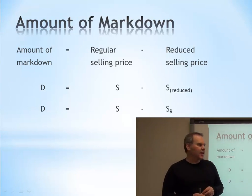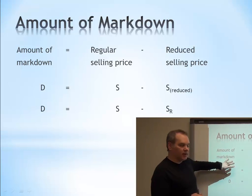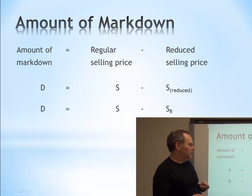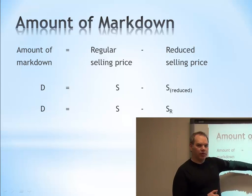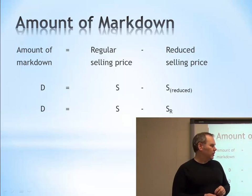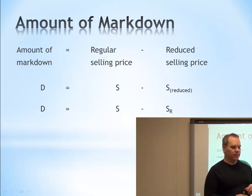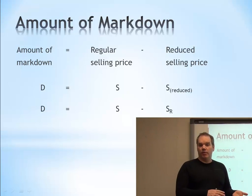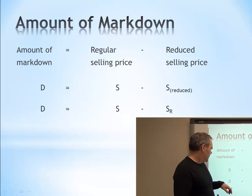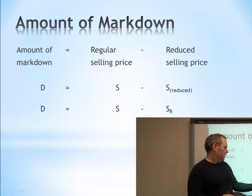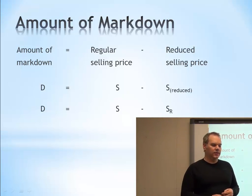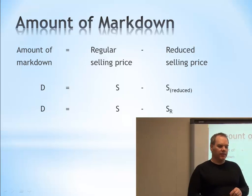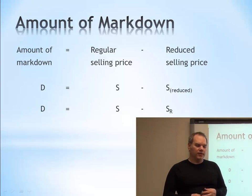First, we look at the cash markdown. The cash amount of our markdown is the regular selling price minus the reduced selling price. In formula terms: markdown amount = S minus SR, where S is the regular selling price and SR is the reduced selling price.